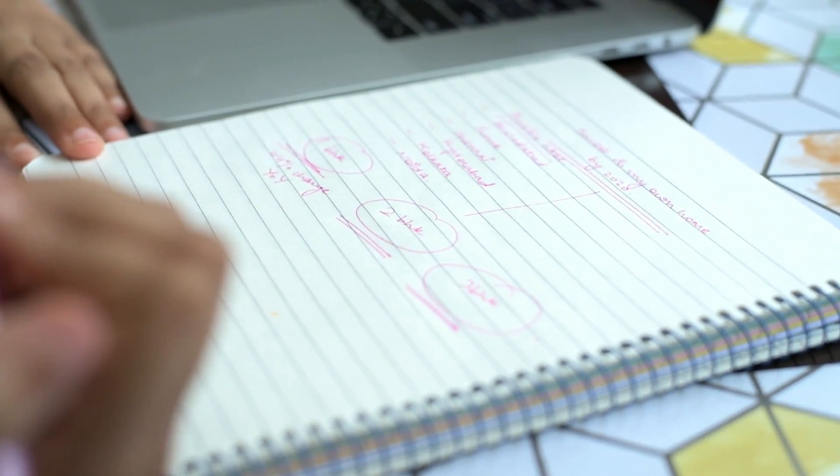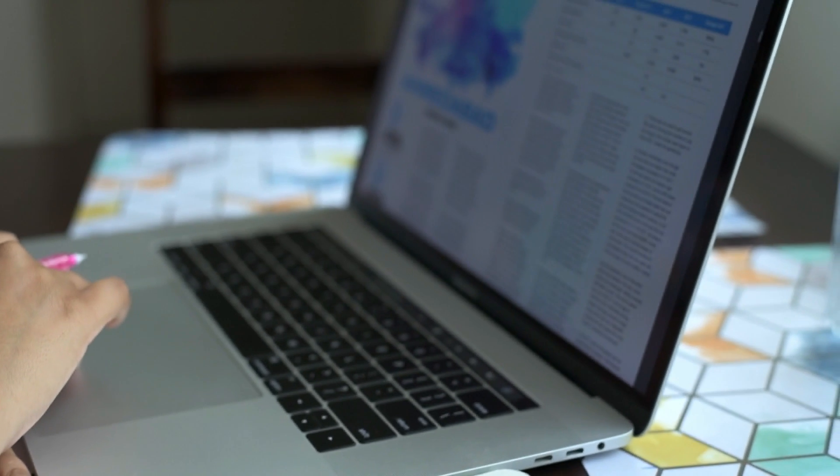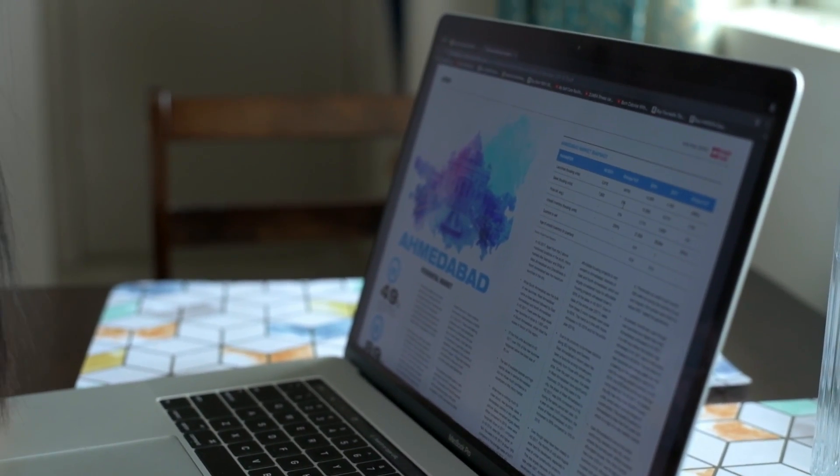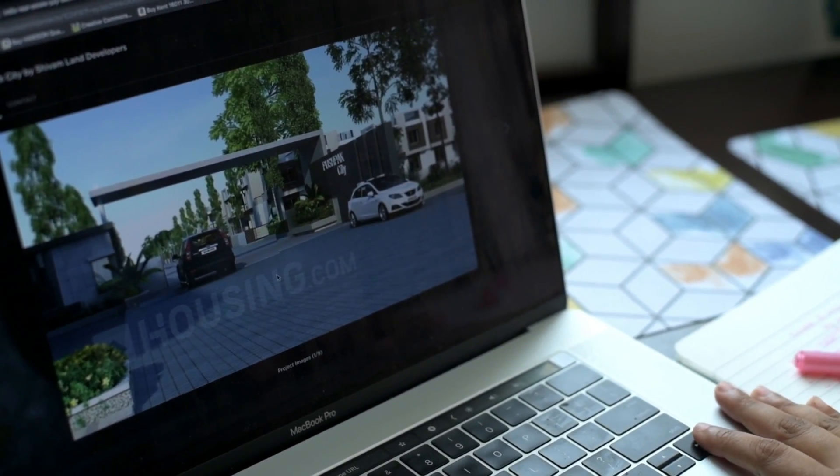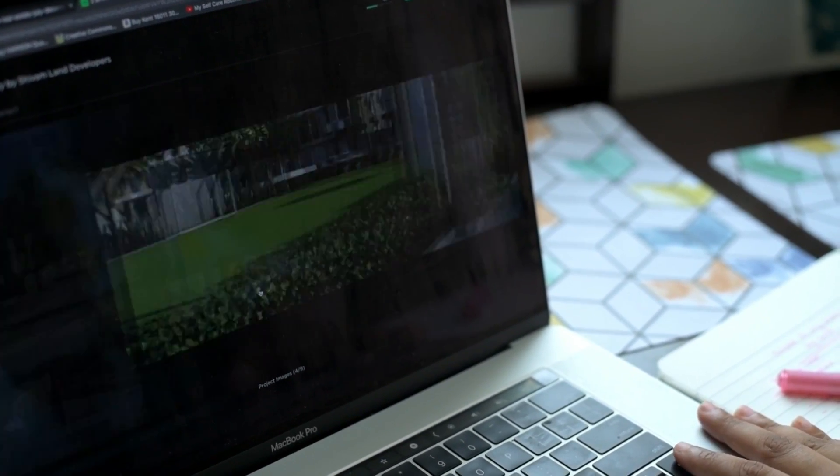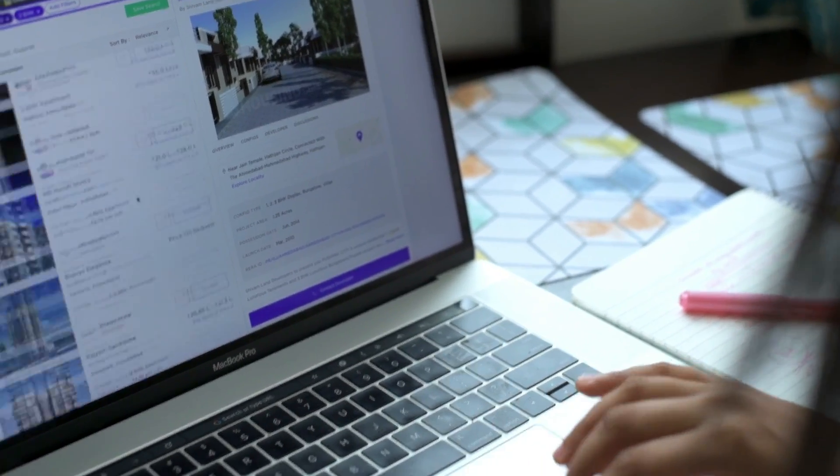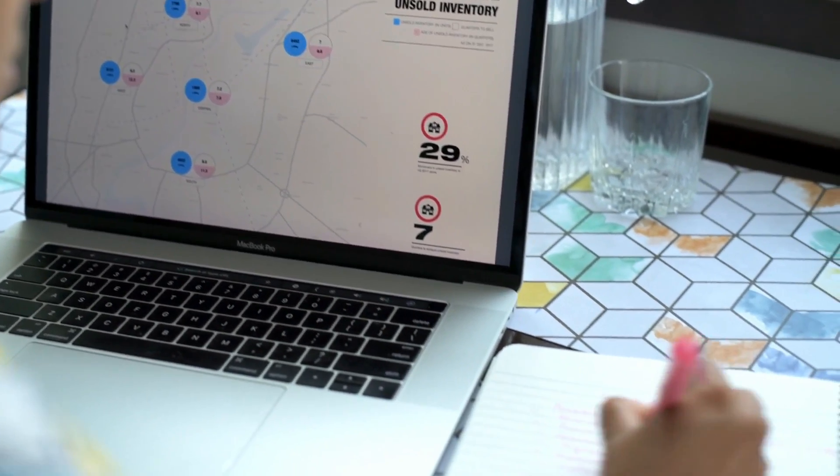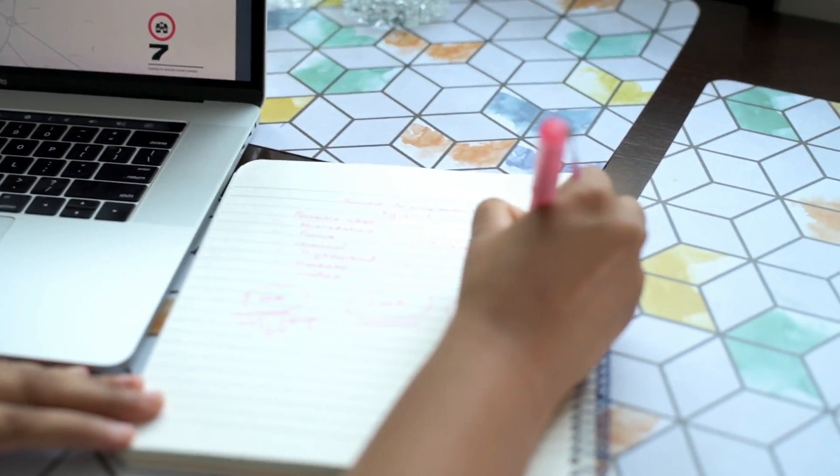Now if your goal is to say buy a car, then you would have to start researching about the different cars that are available in the market and the financial requirements that you would have for each of these cars. If your goal is to go study at a program abroad, you would have to start looking at the university, you would have to start looking at the fee structure, you would have to start looking at the student expenses, the living expenses, the different ways in which you would be able to earn your income while you're staying there and things like that.